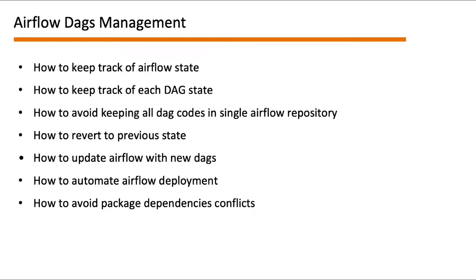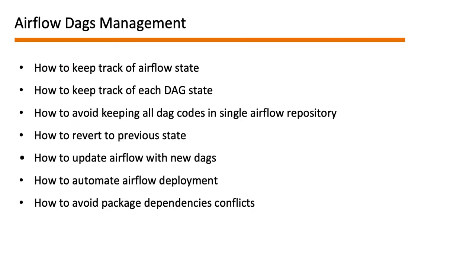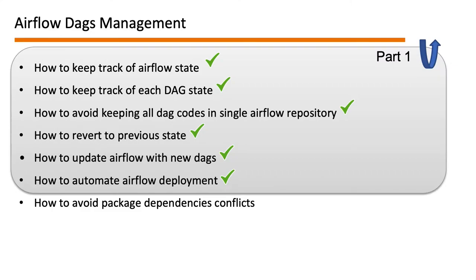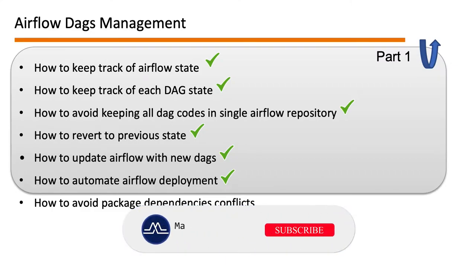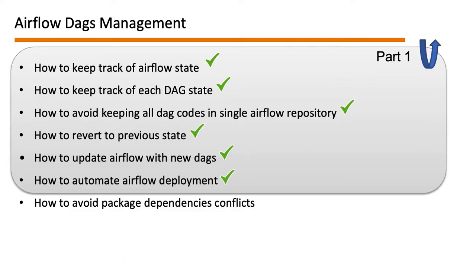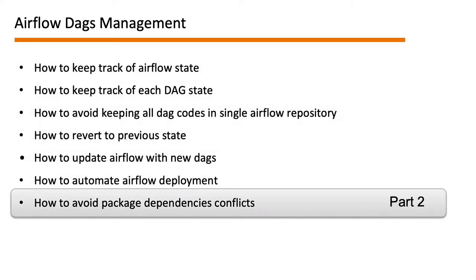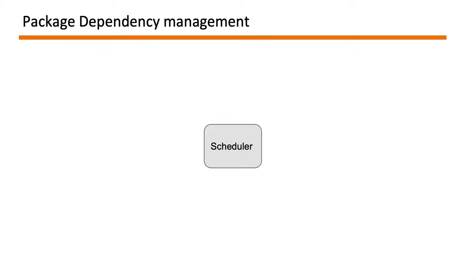Hello everyone, welcome back to our channel Maxco Tech. This is the second part of the video on tag management and versioning. In the first part we discussed possible resolutions on how you can manage and efficiently operate your Airflow environment where you have more than hundreds of DAGs. In this video we are going to look at how you can manage package dependencies within your Airflow environment and also how to avoid package dependency conflicts across multiple DAGs.